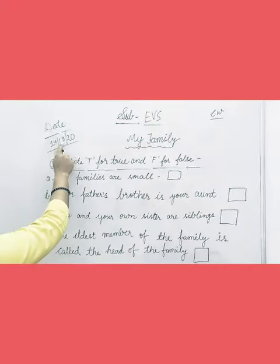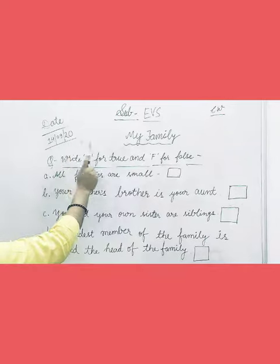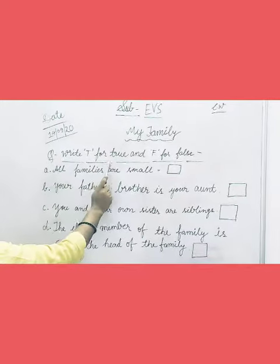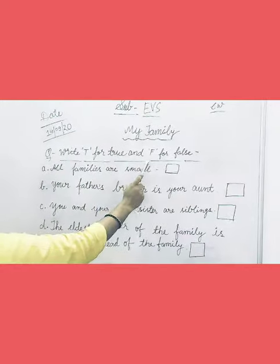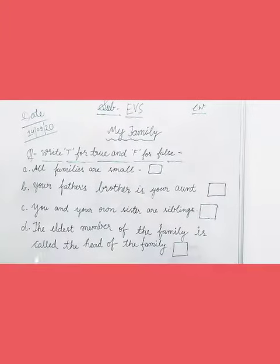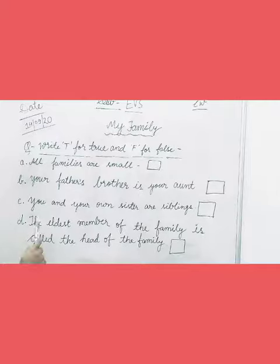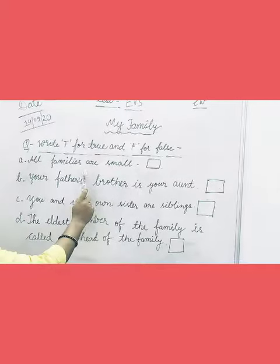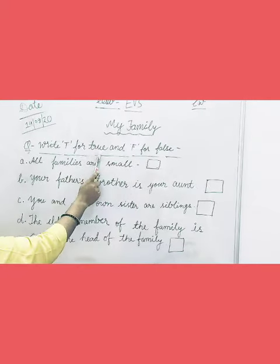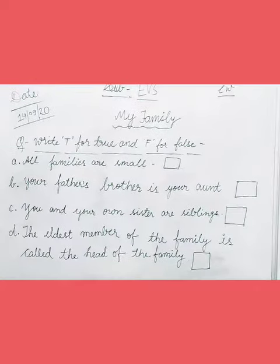So first you have to write the date, 4/9/2020. Then write the question: write T for true and F for false statement in class form. So children, here some sentences are given.